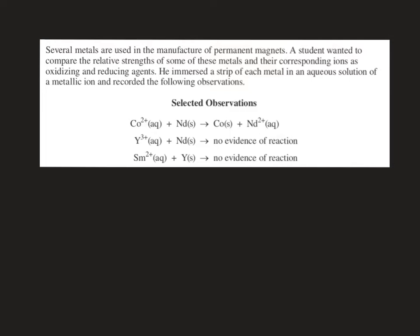So this is a typical question that you'll see. Several metals are used in the manufacture of permanent magnets. A student wanted to compare the relative strengths of some of these metals and their corresponding ions as oxidizing and reducing agents. He immersed a strip of each metal in an aqueous solution of a metallic ion and recorded the following observations.